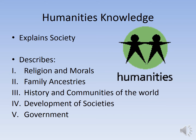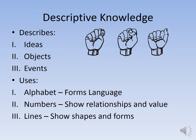Then there's humanities knowledge, which explains society. What you do in social studies class is more humanities knowledge — it explores religion, morals, world history, governments, and family ancestries. Then there's descriptive knowledge, which describes ideas, objects, and events, and uses forms of language like alphabet, numbers, and lines. This is what you would be doing in your ELA and math classes — understanding how letters make up words, words make up sentences, sentences make up paragraphs, and paragraphs make up papers. The same applies to numbers: how you can add, subtract, multiply, and divide. That would be descriptive knowledge.